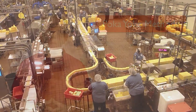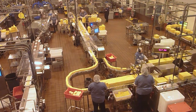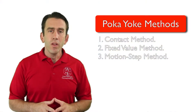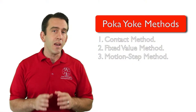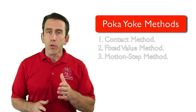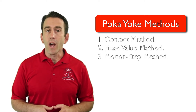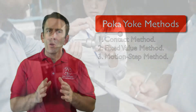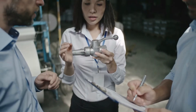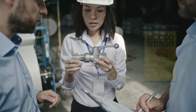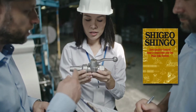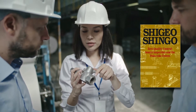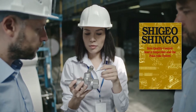In addition, they can be used at the source for inspection or in the informative inspection format. But how do these different methods sense that an error may occur — how do they sense that something is not right or that an abnormal condition is about to occur? Typically, anyone trying to mistake-proof a process, especially if they are following Dr. Shingo's suggestions in the book 'Zero Quality Control: Source Inspection and the Poka-Yoke Method,' will use one of three types of sensing devices.